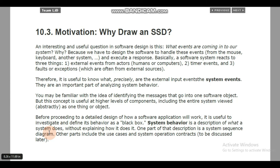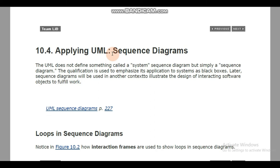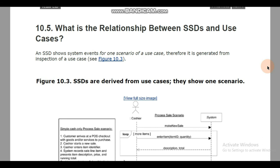One important point to keep in mind while applying UML in sequence diagrams: UML does not define something called a 'system sequence diagram' — it simply defines a sequence diagram. UML, which stands for Unified Modeling Language, has a diagramming notation but does not define any system sequence diagram. So when you draw a sequence diagram using UML notation, you simply draw a sequence diagram — they are just sequence diagrams.